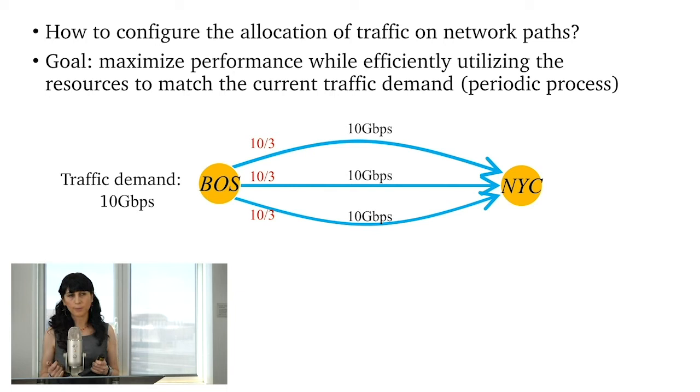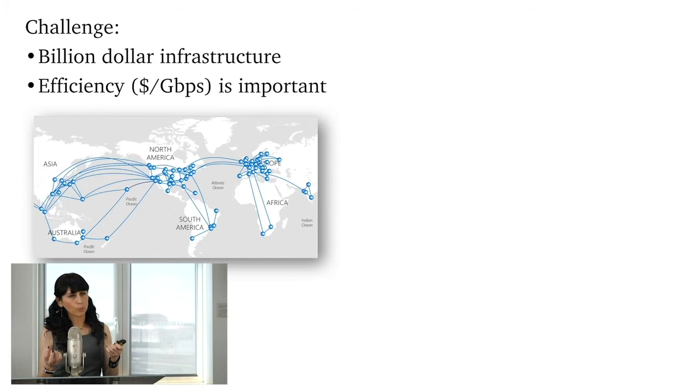So this seems pretty simple, right? But it's not as simple when your network looks like this, looks like the entire world is connected together. And it costs a billion dollars to build this network. So efficiency in this sense, which is dollar per gigabits per second, how much money am I spending to carry one gigabits per second of data from point A to point B, it becomes a very major metric.